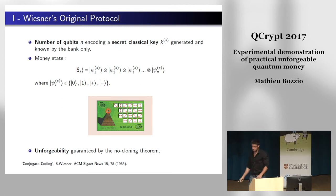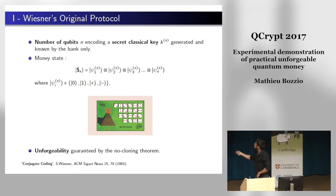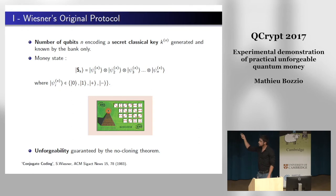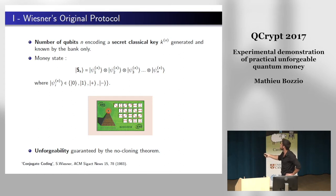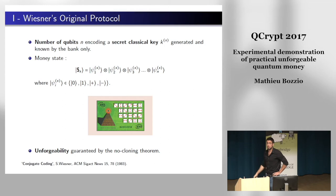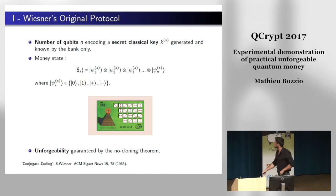Quantum money originally triggered the field of quantum information — it was even before BB84. The idea is to use the laws of quantum mechanics to make unforgeable quantum money. The bank generates n qubits and a random secret classical key Ks, known only to the bank. The quantum banknote state is a separable n-qubit state. In an ideal world, the quantum banknote would be a quantum memory storing all the qubits with more or less infinite lifetime.